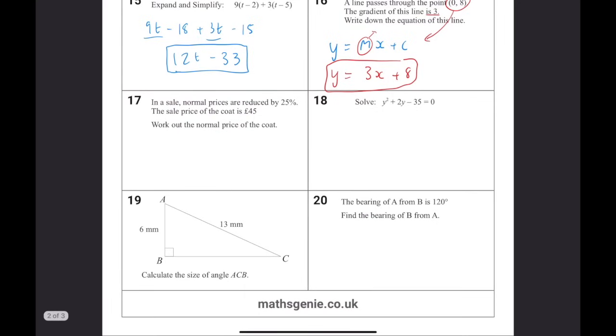In a sale, normal prices are reduced by 25%. The sale price of the coat is £45. So because it's been reduced by 25%, that means this new price is 75%. From there, we can divide it by 3 to get 25%, which is going to be 15. So 100%, which was the original, is these two added up, which gives us £60.